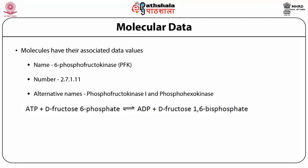Whenever this reaction is catalyzed, the enzyme involved is always 6-phosphofructokinase with assigned enzyme commission number 2.7.1.11. This reaction is catalyzed in all species, for example E. coli, yeast, mouse, human and so on. The reaction involved is the same in all the organisms. However, the amino acid sequence of the enzyme 6-phosphofructokinase may or may not be the same in all the organisms. In addition to this data, there may be associated information which is included as attached comments to the main data. This additional information or attached comments is called annotation.